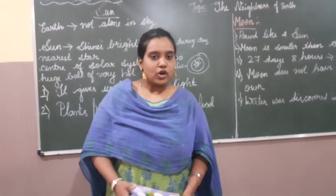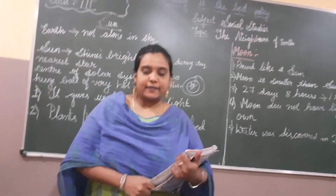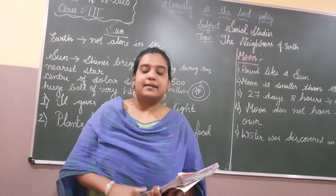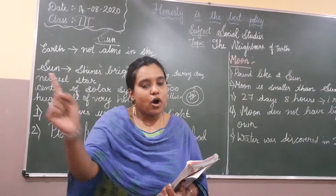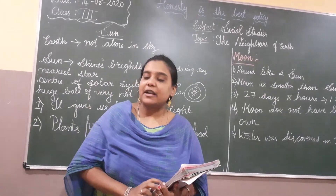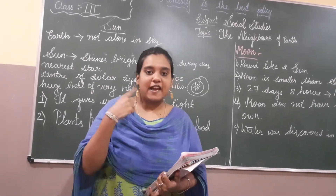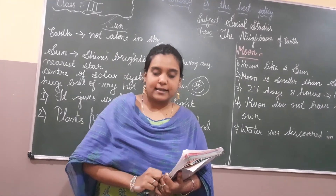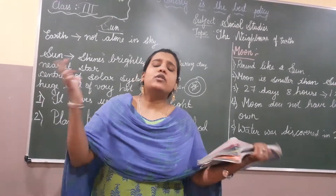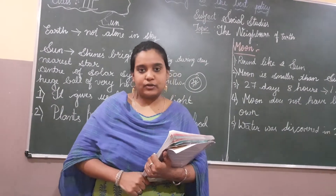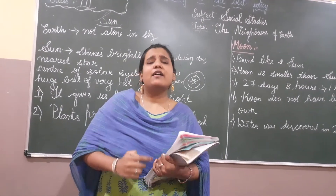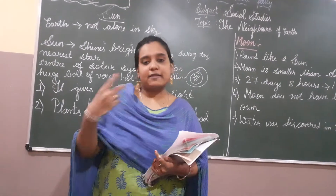Earth is not alone in the sky; we have other seven planets also. Earth is the third planet. All the planets revolve around the sun. Apart from the sun, we have the moon and stars. The sun shines brightly in the day, and the moon takes light from the sun to shine at night.